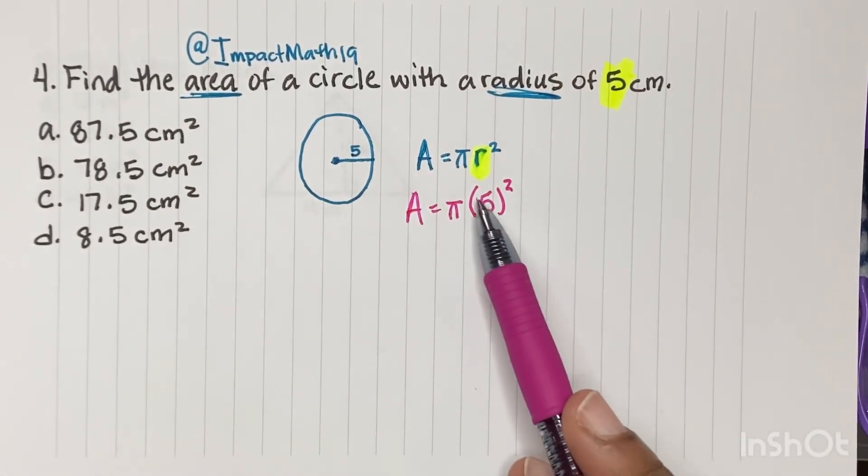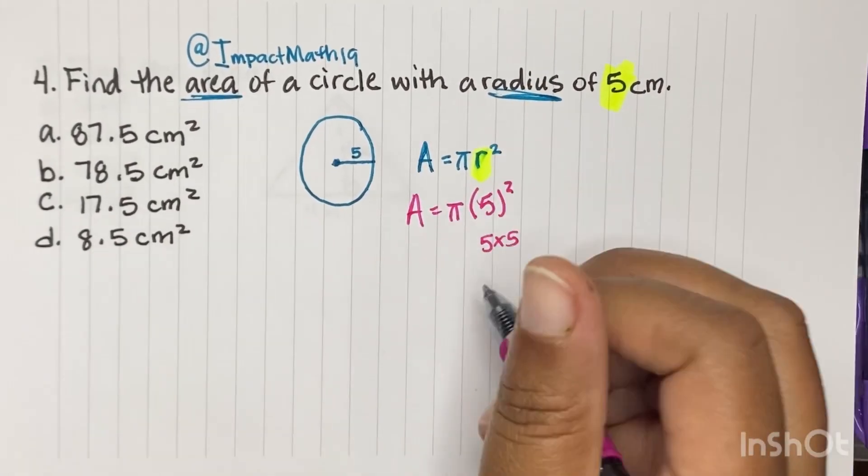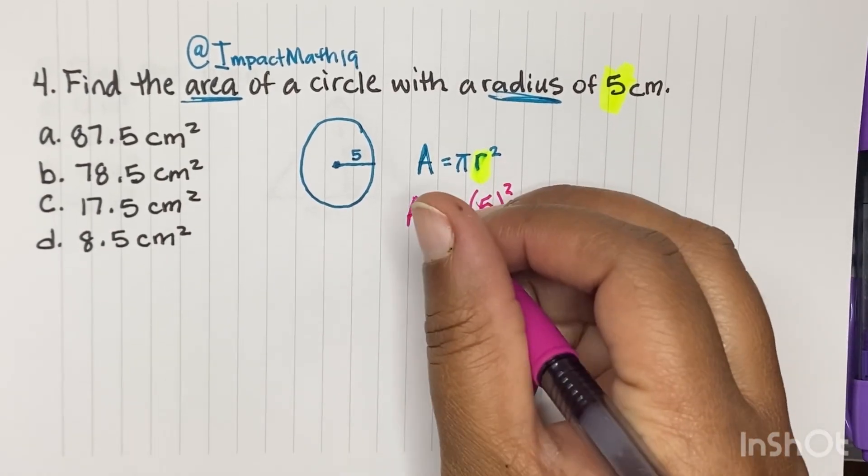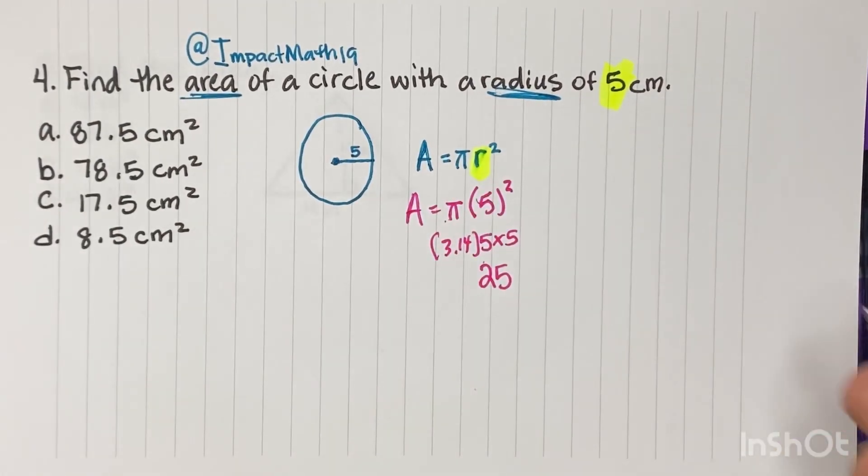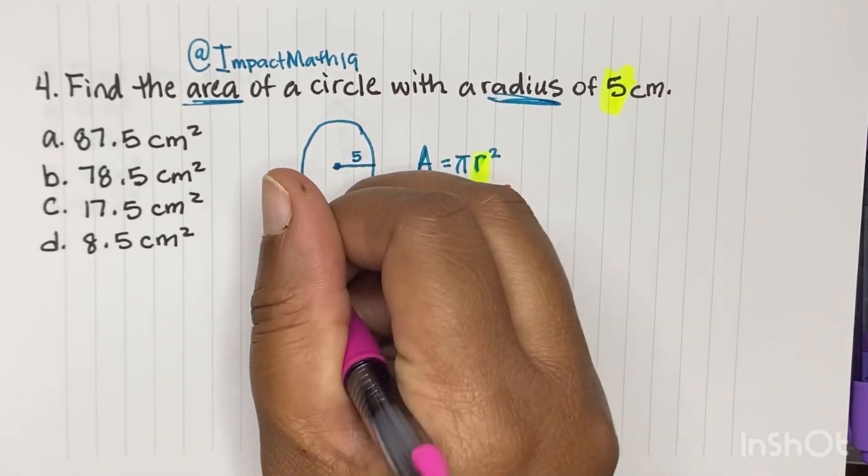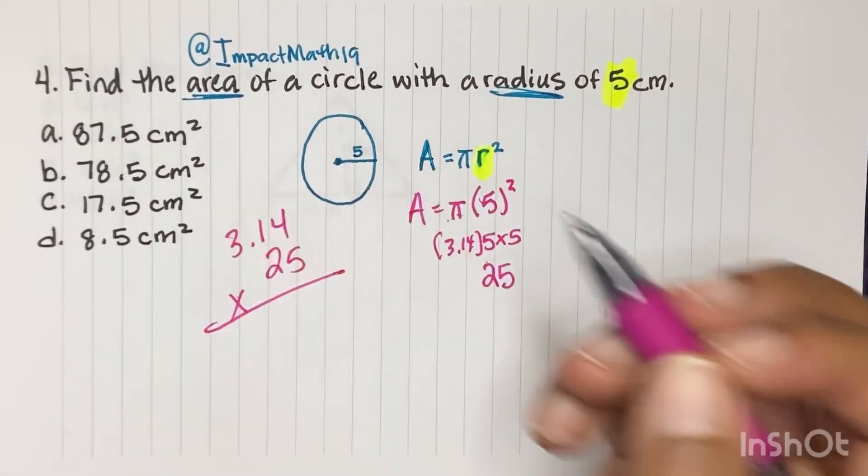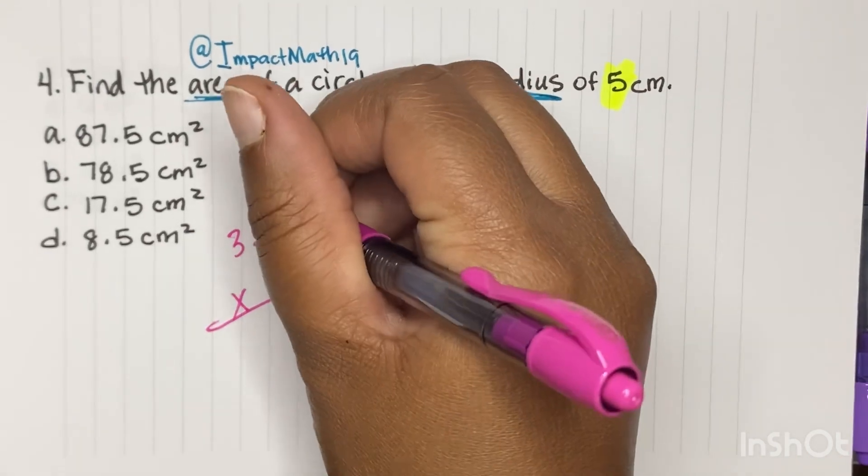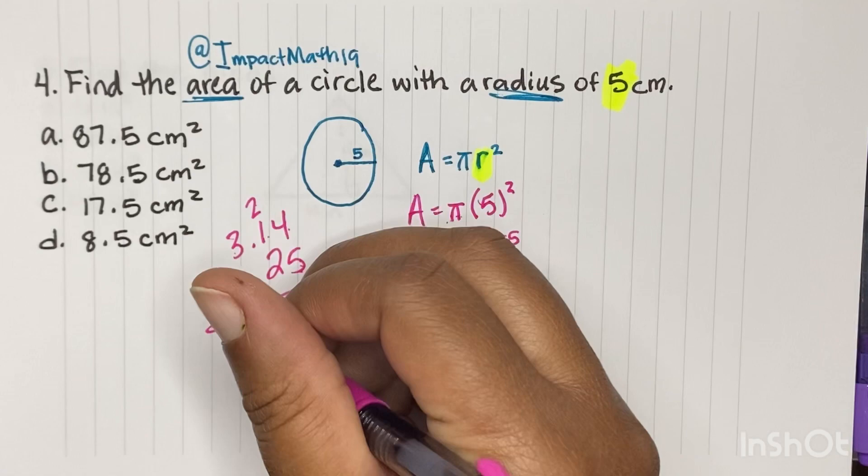Now this becomes like order of operations. So 5 squared is 5 times 5. You got to remember that. Okay. And it's 25. And then we will say pi is 3.14 and so on. But we're going to use 3.14 for pi. So we're going to do 25 times 3.14 to see what our answer is. So 5 times 4 is 20, carry the 2. 5 times 1 is 5, plus 2 is 7. 5 times 3 is 15.